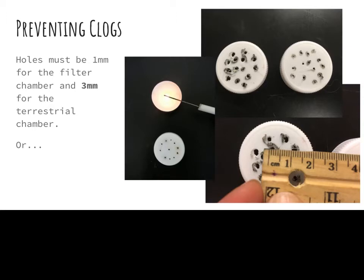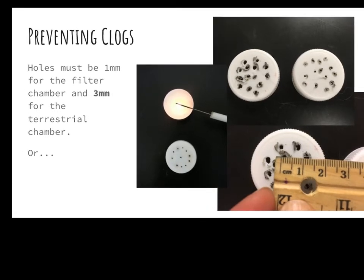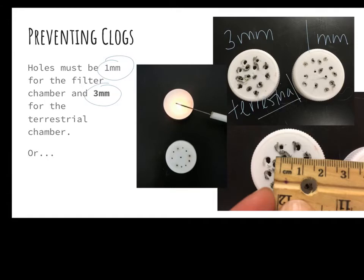Students need two lids for their eco-columns from the water bottles, and they're going to use a hot dissecting probe to build drainage caps. The two key measurements are one millimeter and three millimeters in diameter. The three millimeter holes go with the soil and the terrestrial chamber — this prevents clogs because the soil silt tends to clog. Students must actually measure to confirm their diameters are three millimeters. Students who skip measuring end up with clogs.